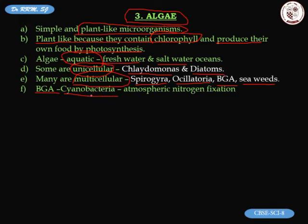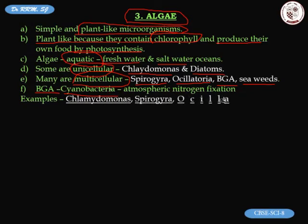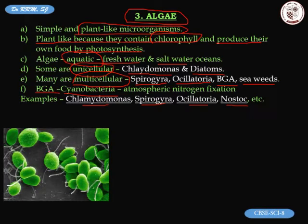Cyanobacteria help in nitrogen fixation — they fix atmospheric nitrogen which is useful for plants. Examples of algae to remember include chlamydomonas, spirogyra, oscillatoria, and nostoc.